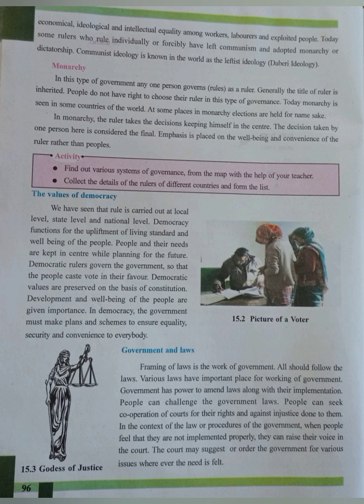In a monarchy, the government is ruled by one person and the position of the king is inherited. The people do not have the right to elect their own ruler, and the rights of people are not maintained. The king's will becomes the law, and he does all the work of the state himself. The decisions taken by the king are considered final, and emphasis is placed on the well-being or convenience of the ruler instead of the people.